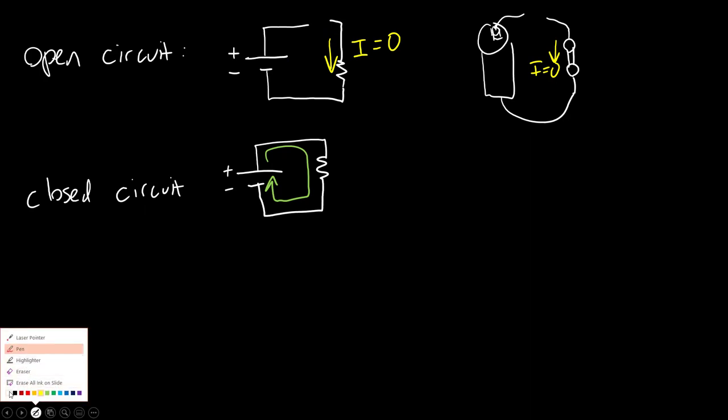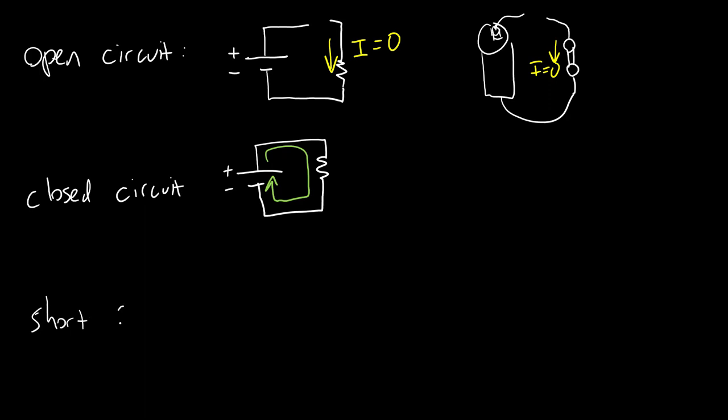What you do generally want to avoid is a short circuit. This is when you have some unintentional connection between two points in your circuit, creating a direct path for current to flow that you do not want.